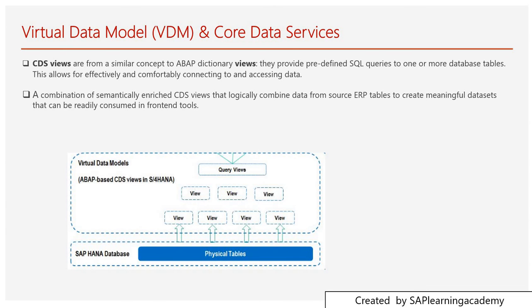The VDM — Virtual Data Model — is a combination of semantically enriched views that logically combine data from ERP tables to create meaningful datasets that can be readily consumed in front-end tools. The VDM is a combination of various CDS views that combine data from various tables and provide a complete set of meaningful data. That model can then be accessed in the Fiori application. That covers the basic concept of CDS and VDM.